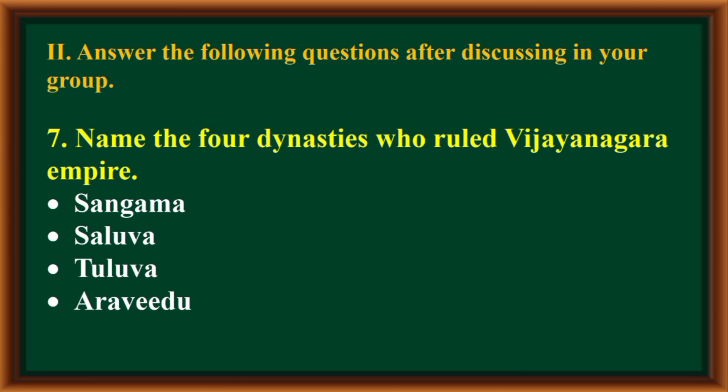Second main: answer the following questions after discussing in your group. Name the four dynasties who ruled the Vijayanagara Empire: Sangama, Salva, Tuduwa, and Aravidu.